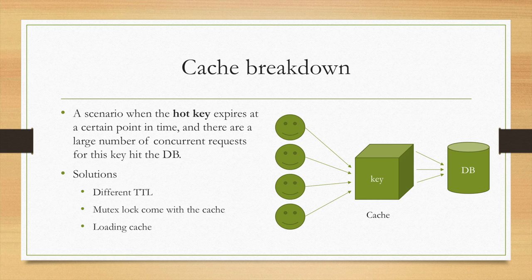For such a problem, usually we have three solutions. One is that we use different TTL. Although the cache keys are put in almost at the same time, they have different eviction times. This will reduce the concurrent number of requests to the database. The second solution is using mutex lock with the cache. When one requests to the database, the other requests will be blocked.